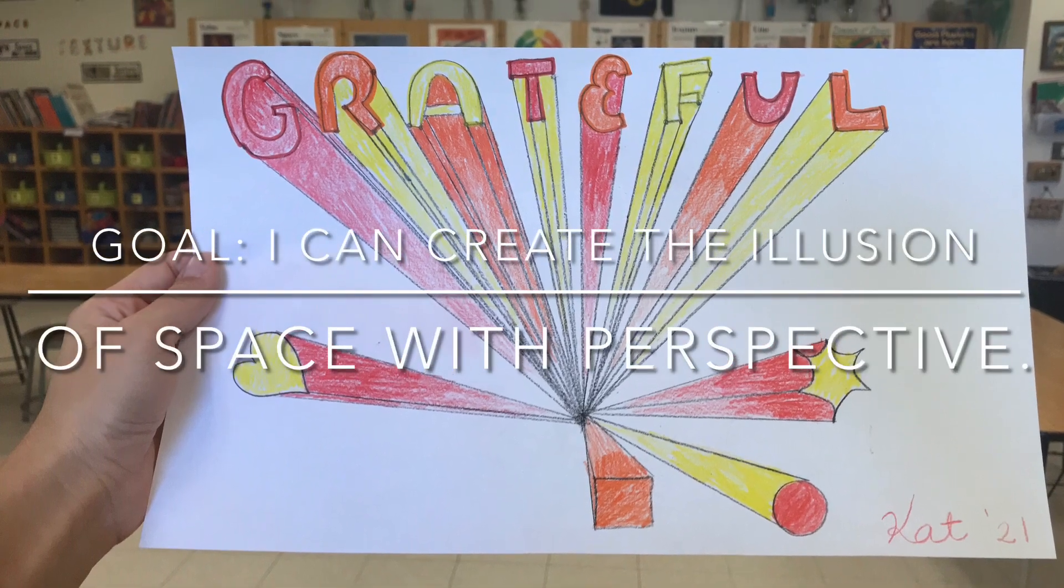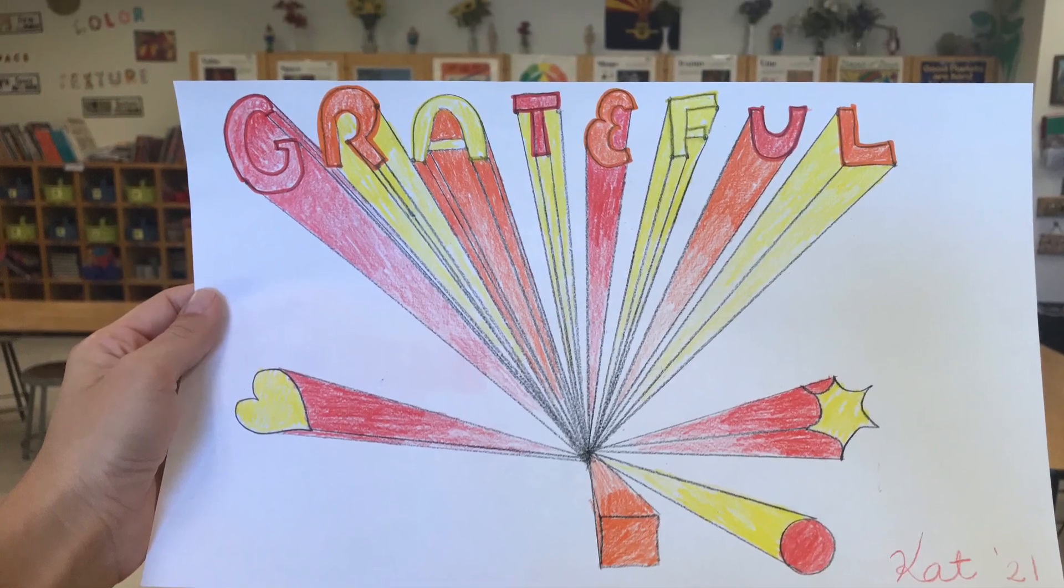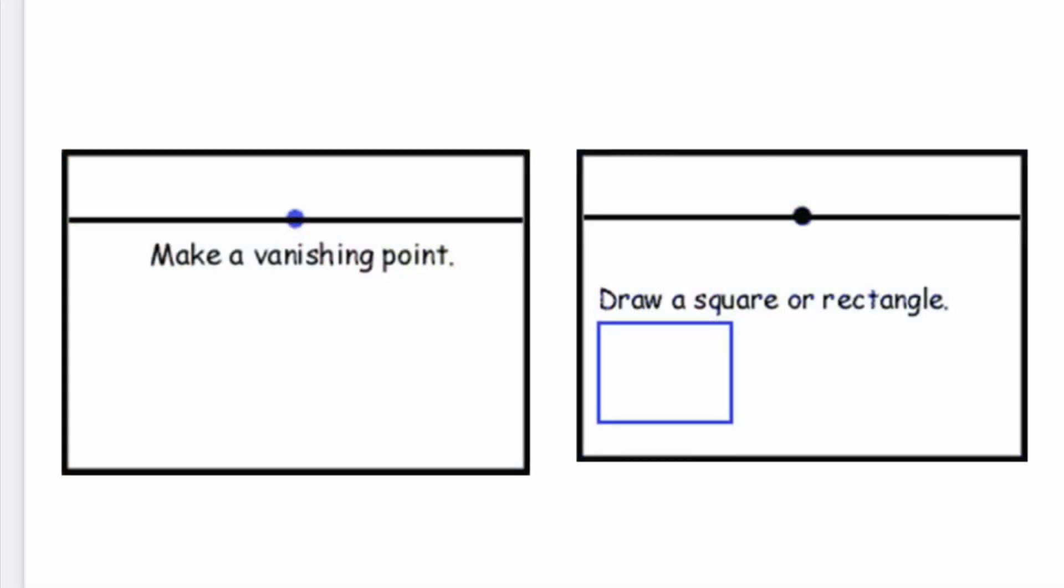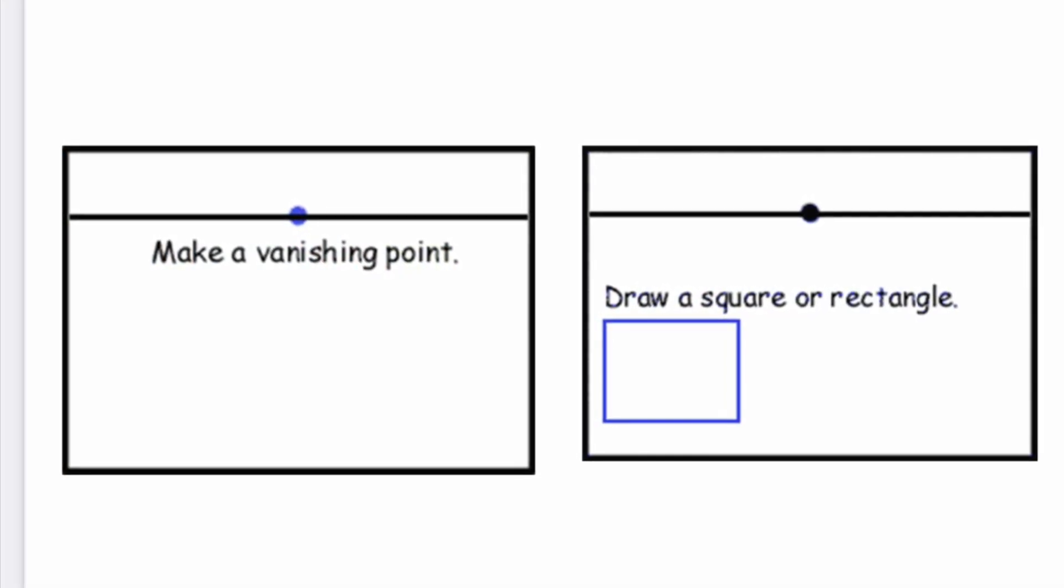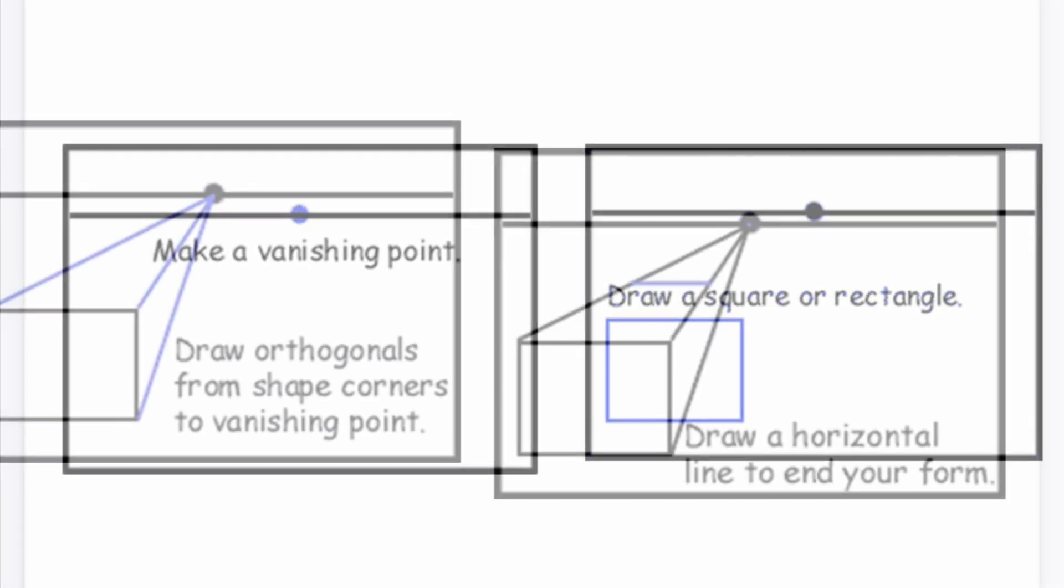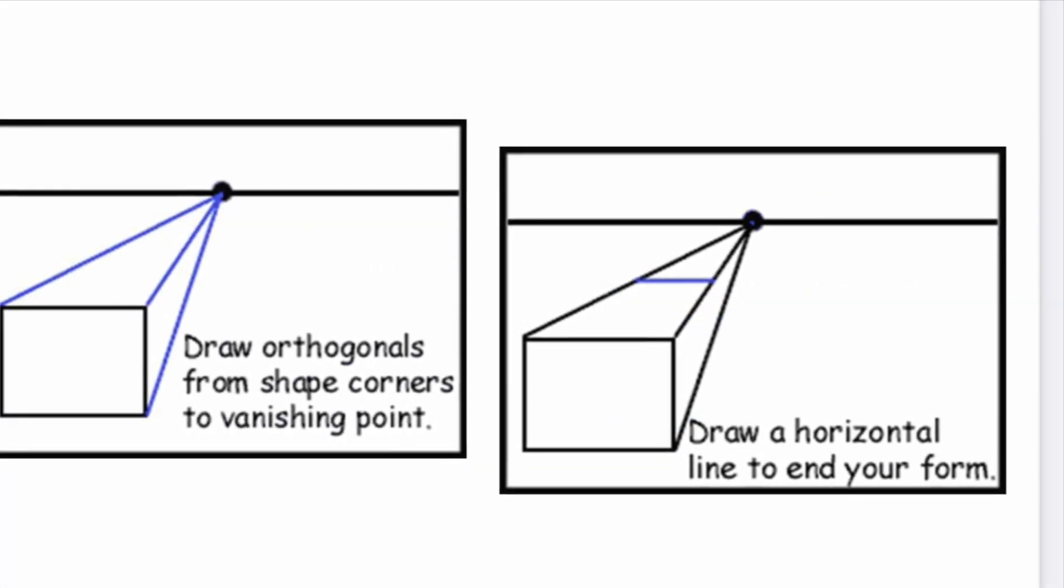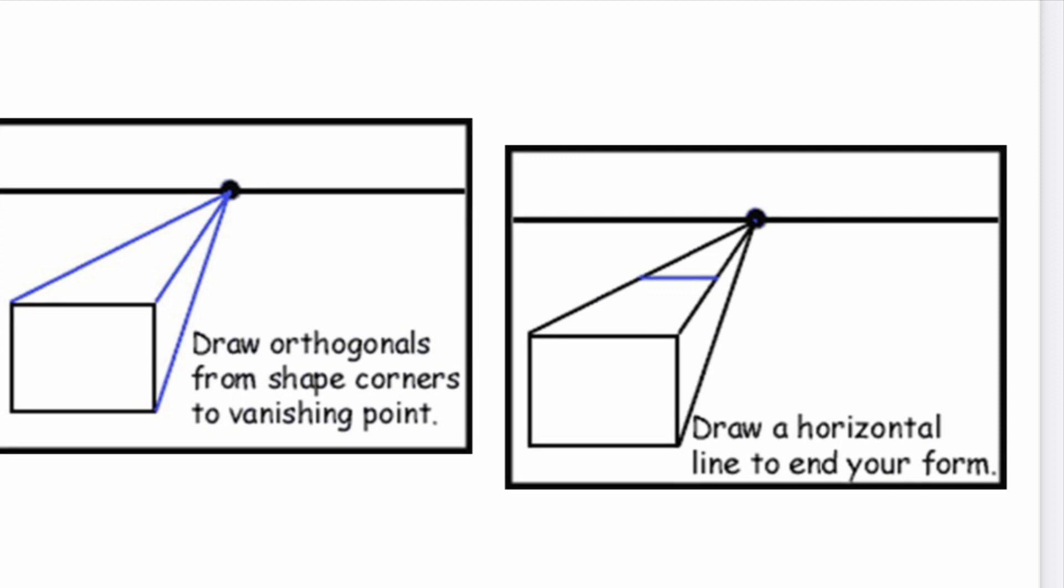Good morning or good afternoon everybody. Today we're back looking at One Point Perspective. One Point Perspective is an illusion artists use to create the feeling of space in a picture or the look of space.